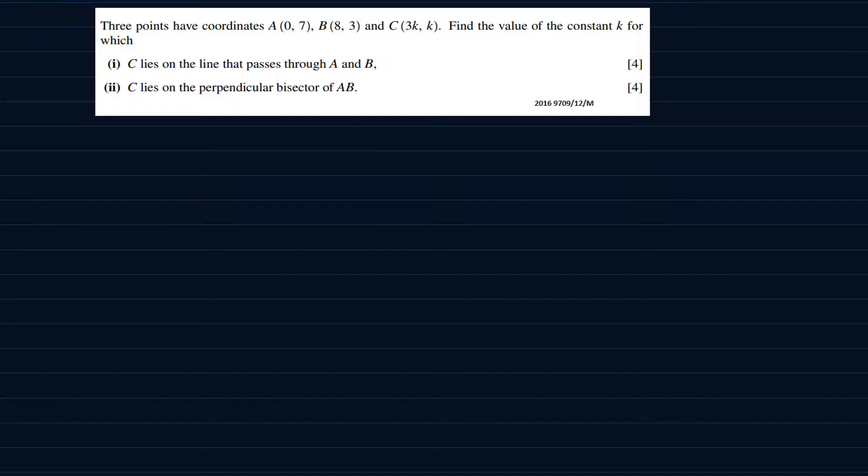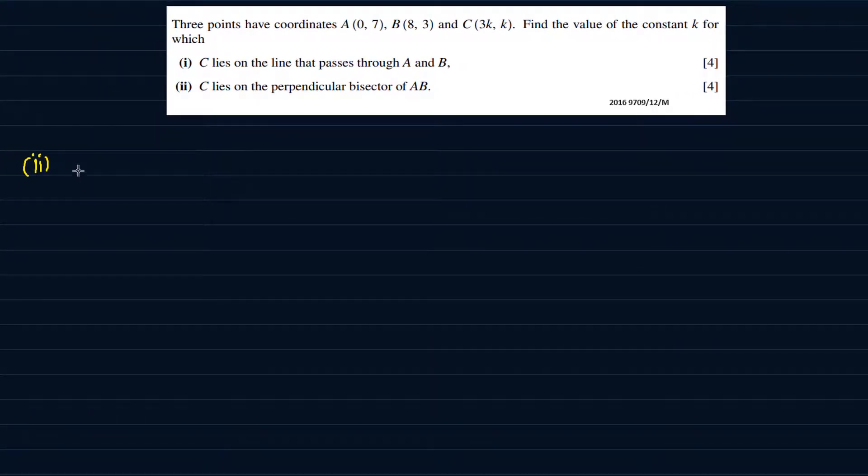Now for part two, again, we are going to have a sketch. They say here we've got two points A and B, and they're saying find the value of the constant k for which C lies on the perpendicular bisector of AB. So we've got AB here and the perpendicular bisector. Maybe this can be the perpendicular bisector. So as you can see here, it's a perpendicular bisector. And according to the question, C has to lie on the perpendicular bisector. Remember the coordinates of C? We've got 3k and k. So we want to find the value of k for which C lies on the perpendicular bisector.